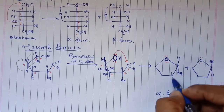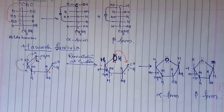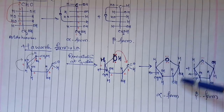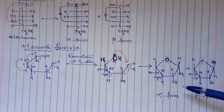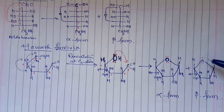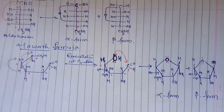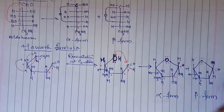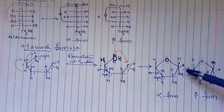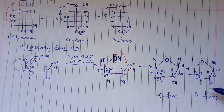The remaining structure is written as it is with the H and OH shown. We have a structure which looks like a five-membered ring in the alpha form, and another five-membered ring in the beta form. Remember, this carbon number one is your anomeric carbon. Just because of this anomeric carbon, we have the alpha form and the beta form. Thank you.